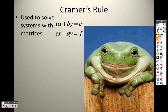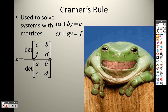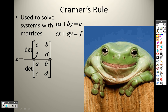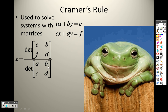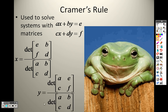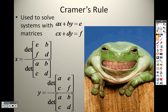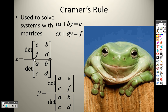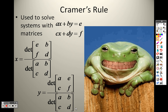All that stuff we did, we can actually use determinants to solve them. You take the determinant of the answer and the Y's divided by the determinant of the X's and Y's. Keep this in mind — the bottom is always the same. It's A, B, C, D on the bottom for all of them. That's always the same.